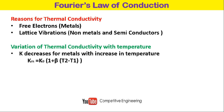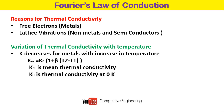To account for this variation, we use an average value called the mean thermal conductivity, KM. It is given by KM equals K0 times (1 plus beta times (T2 minus T1)), where beta is a constant and T2 minus T1 is the temperature difference. K0 is the thermal conductivity at zero kelvin and beta is negative for metals.